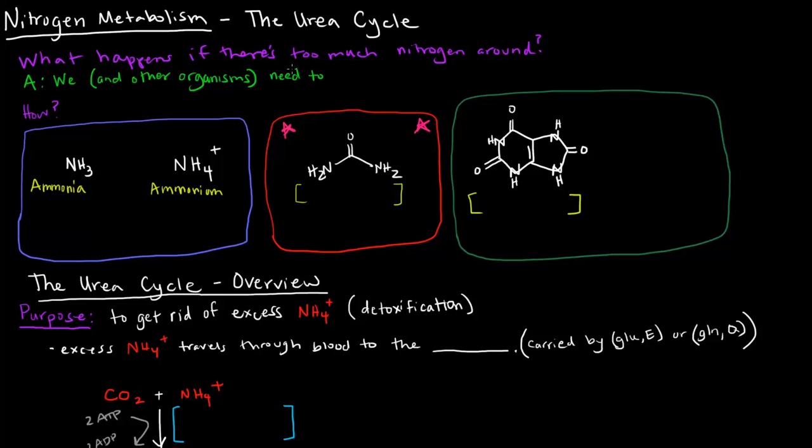In this video I want to talk about the urea cycle. So before we actually talk about the urea cycle, we have to think about what happens if there's too much nitrogen around. Well, we and other organisms need to get rid of it. It's as simple as that. If there's too much nitrogen, we want to get rid of it.